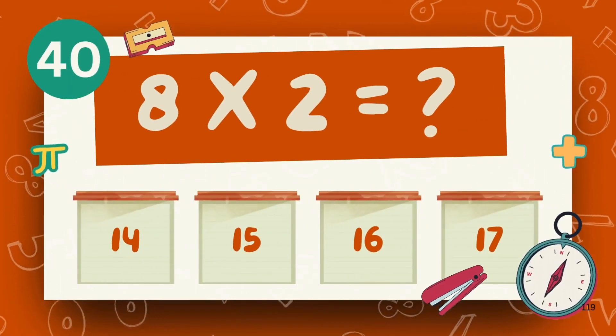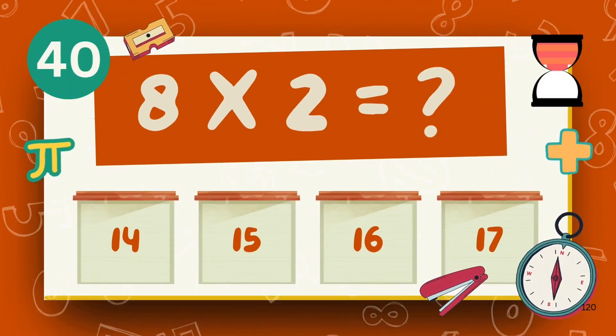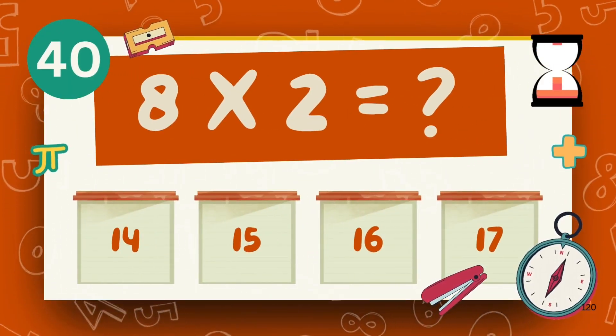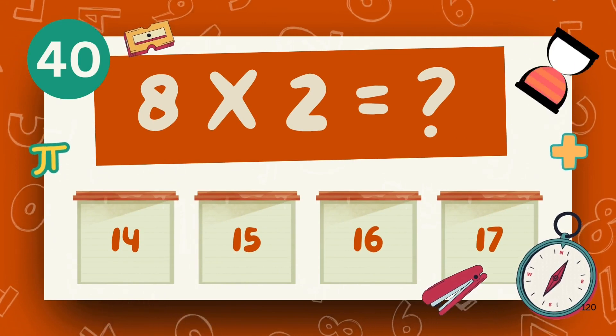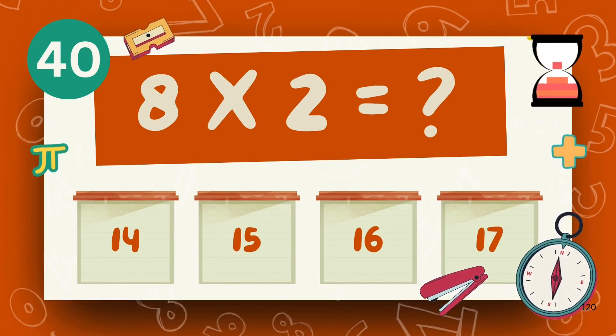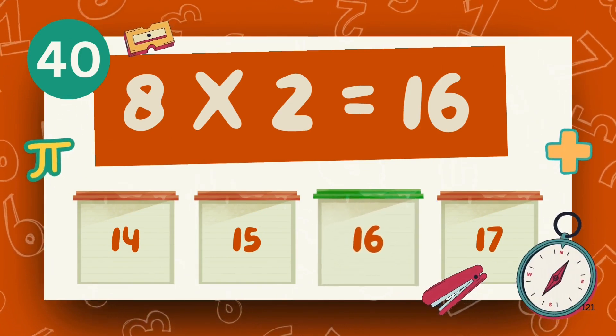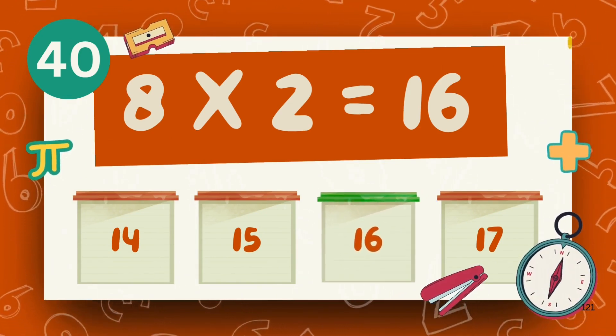What does eight multiply two? The answer is sixteen.